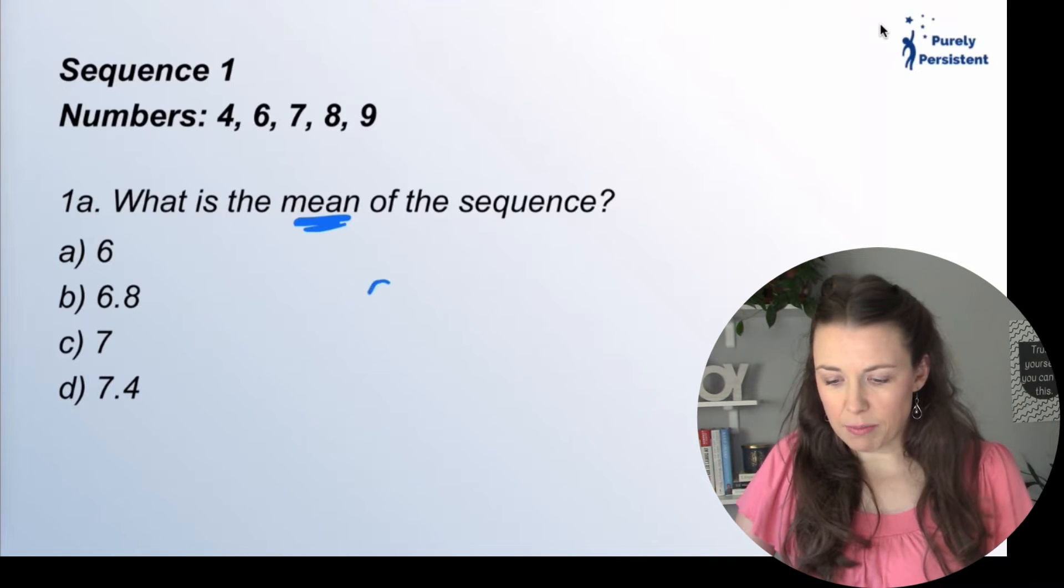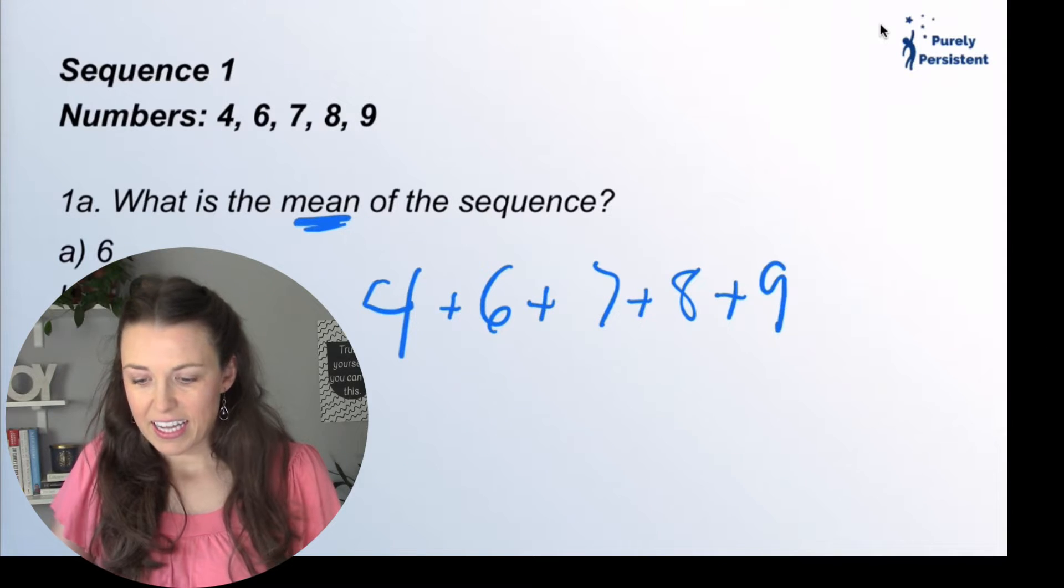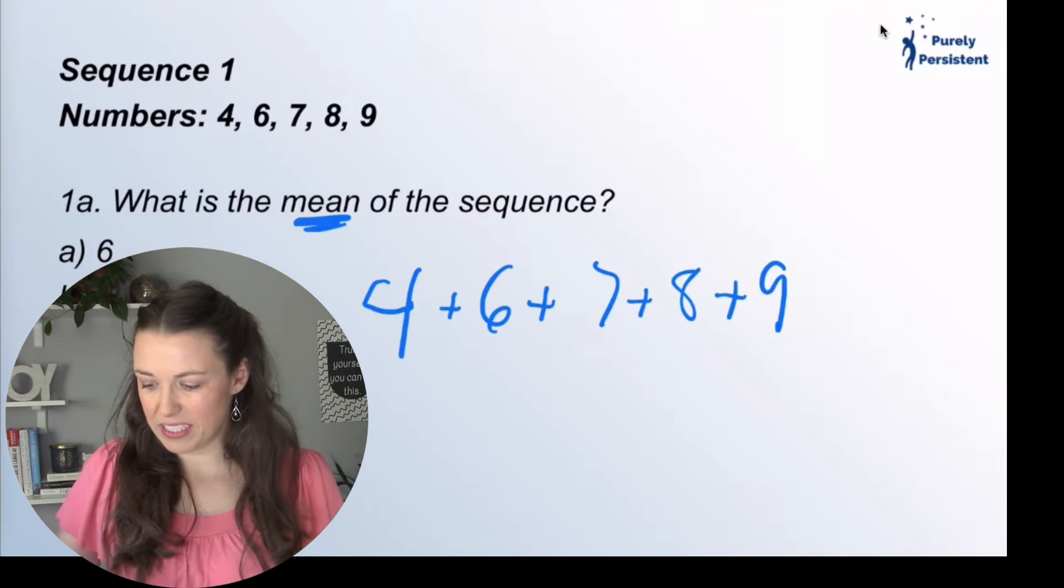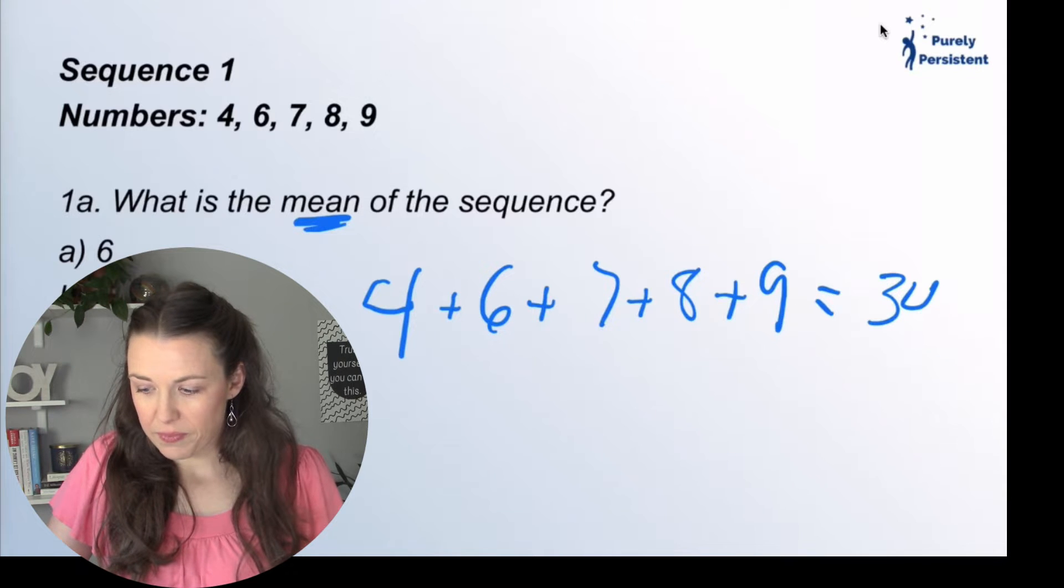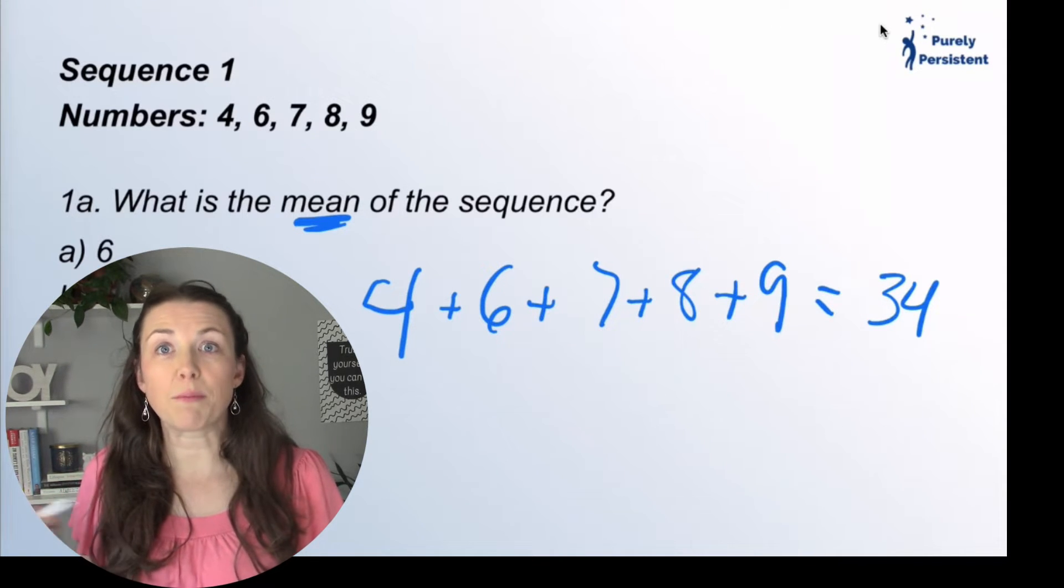So I'm going to add up my numbers: four plus six plus seven plus eight plus nine. I add up all the numbers. Again, using your calculator is really helpful at this point, and I get 34. Now to solve for the mean, I have to count how many numbers there are.